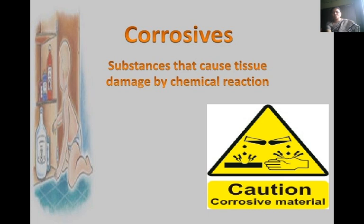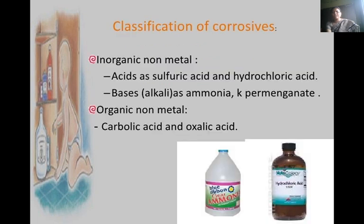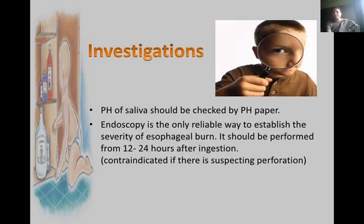Corrosives are substances that cause tissue damage by chemical reaction. Inorganic corrosives include non-metal acids such as sulfuric acid and hydrochloric acid; bases such as ammonia and potassium permanganate. Organic non-metals include carbolic acid and oxalic acid. For investigations, saliva should be checked by pH paper. Endoscopy is the only reliable way to establish the severity of esophageal injury and should be performed 12–24 hours after ingestion.